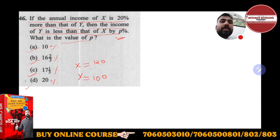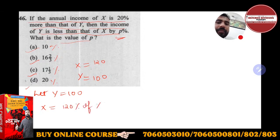So X is 20% more than Y. Let Y equal 100. So X equals 20% more, which means 120% of Y. If you calculate this: 120/100 × Y, Y is 100, so 100 cancels, and X becomes 120.